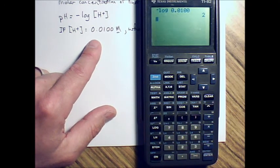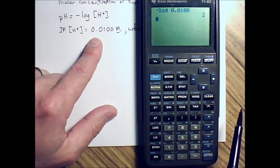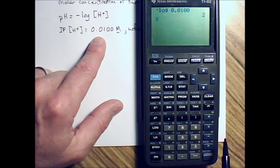So the pH for a hydrogen ion molar concentration 0.0100 is 2.